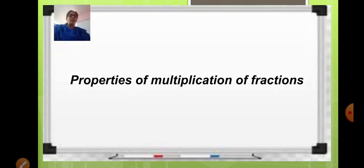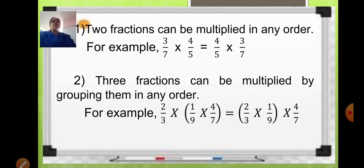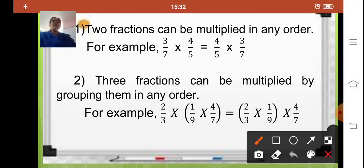Coming to the properties of multiplication of fractions. The first property is: two fractions can be multiplied in any order. We have already learned the properties of addition and subtraction. Similarly, for multiplication of fractions — if there are two fractions to be multiplied, you can multiply in any order and the answer will remain the same. Here you can see the example: 3 upon 7 multiplied by 4 upon 5 — you can change the order to 4 upon 5 multiplied by 3 upon 7, and your answer will remain the same.